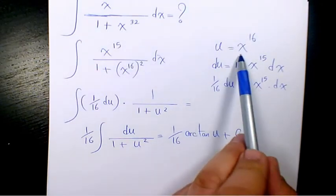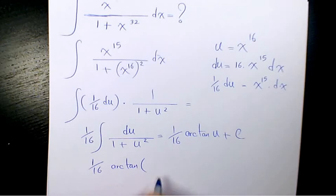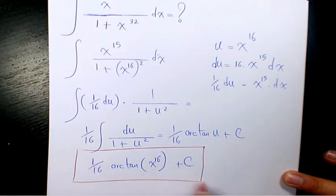What is u? u is x to the power of 16. So it's going to be 1 over 16 arctan of x to the power of 16 plus a constant number. This is the final answer.